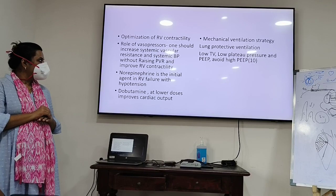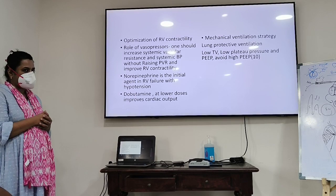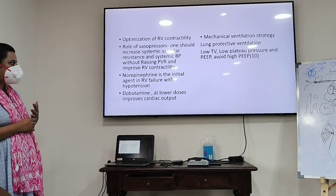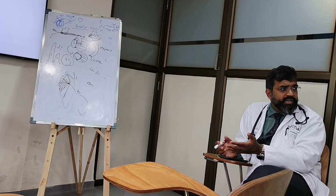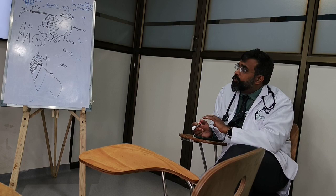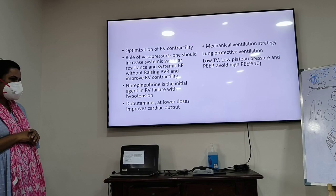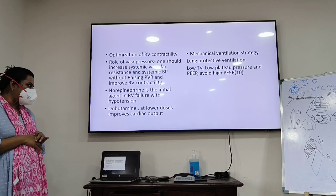Role of vasopressors: the ideal vasopressor should increase systemic vascular resistance and BP without increasing pulmonary vascular resistance. Norepinephrine is the initial agent in RV failure with hypotension, because apart from alpha action it also has beta-1 action — improving cardiac output while increasing SVR. It is known to drop pulmonary vascular resistance. Dobutamine in lower doses will improve cardiac output, and that is why low-dose dobutamine was used in that patient. Higher doses of dobutamine will cause tachycardia.